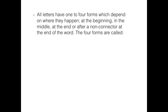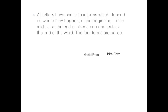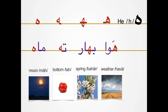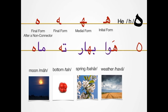All letters have one to four forms, which depend on where they appear: at the beginning, in the middle, at the end, or after a non-connector at the end of the word. The four forms are called Initial form, Medial form, Final form, and Final form after a non-connector or alone form. Let's take a look at the four different forms for the letter H.